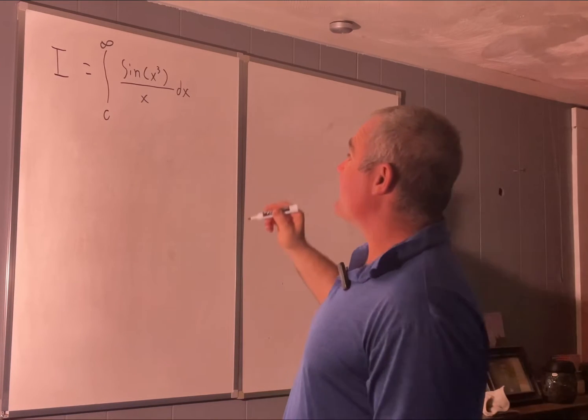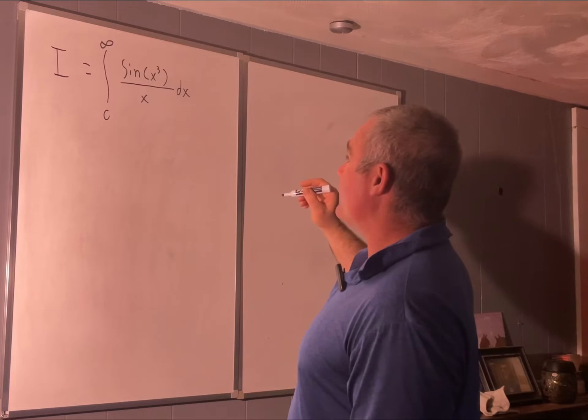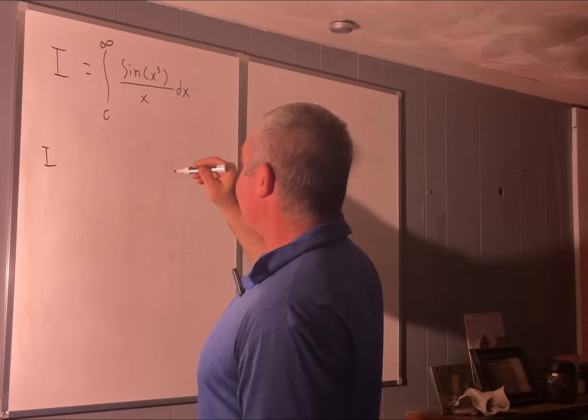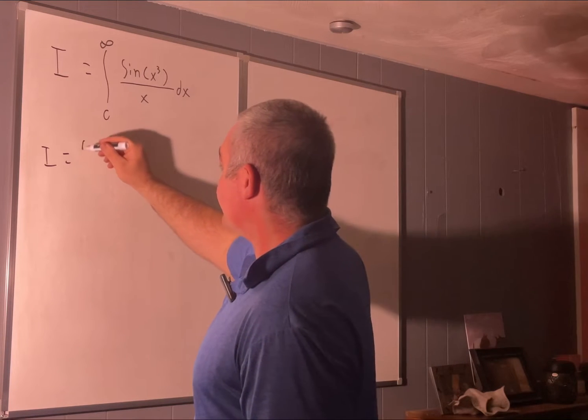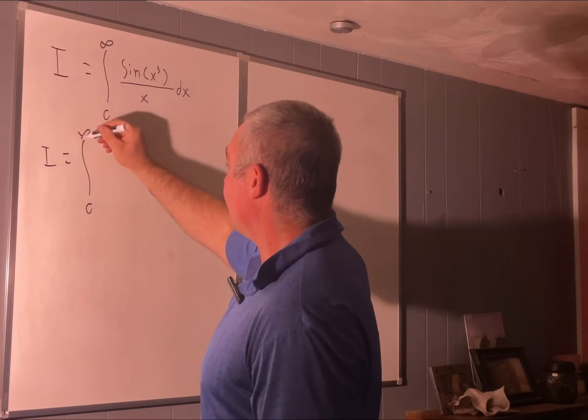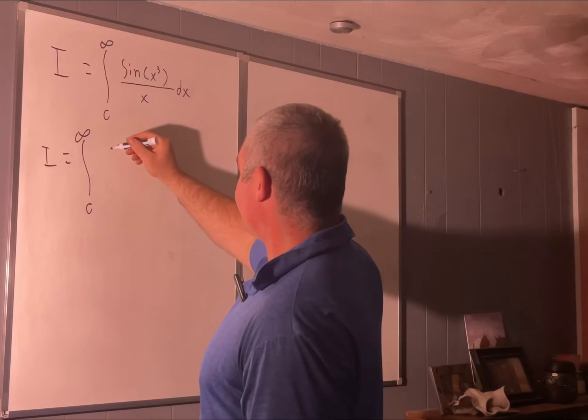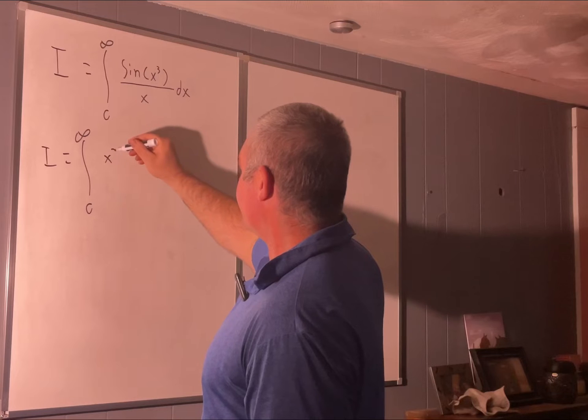All right, so first thing that we will do is multiply the top and the bottom by x squared. So we have I is equal to the integral from zero to infinity of x squared.